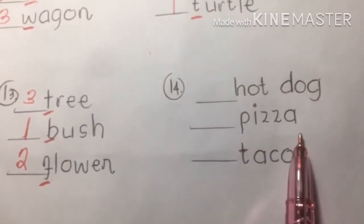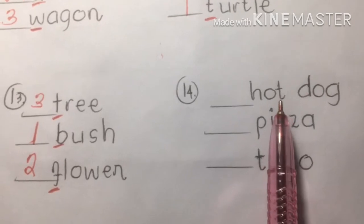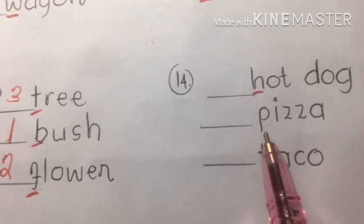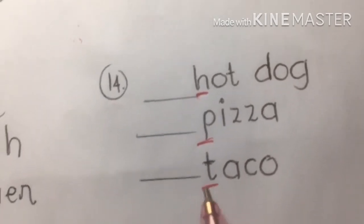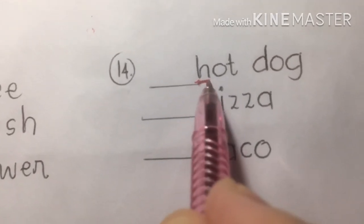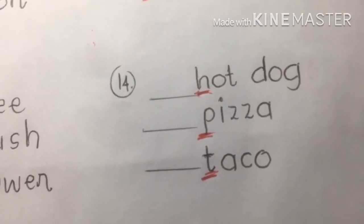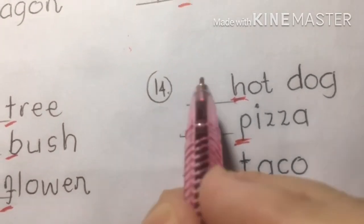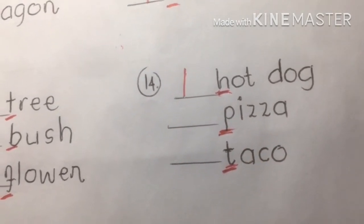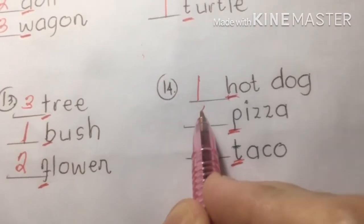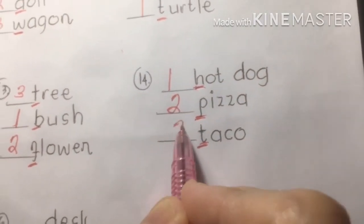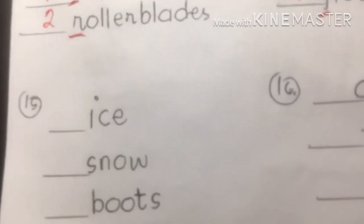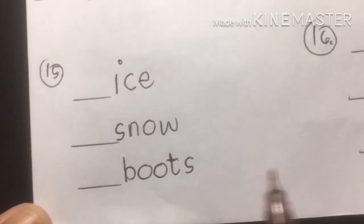Number fourteen: hot dog, pizza, taco — these are foods. Hot dog is a compound word but we consider it as one word. Underline the initial sounds: H, P, and T. Hot dog is first — H. Pizza is second — P. And taco is third — T. So: hot dog, pizza, taco.